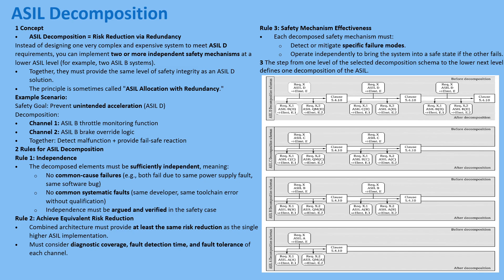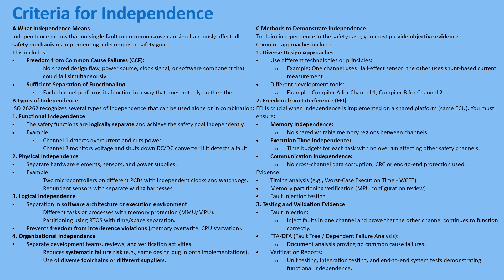To prove independence, diversity becomes absolutely critical — you can't just have two identical channels. First, functional independence: the safety functions should be logically separate, doing the job differently. Maybe one channel uses software monitoring to detect overspeed, while the redundant channel uses a completely different approach — a hardware safety mechanism that physically cuts a power relay if the speed exceeds a threshold. Same goal, prevent overspeed, but different means.